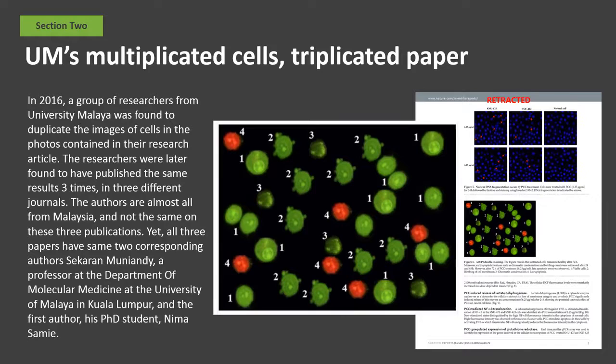In 2016, a group of researchers from University Malaya was found to duplicate the images of cells in the photos contained in their research article. The researchers were later found to have published the same results three times in three different journals. The authors are almost all from Malaysia and not the same on these three publications. Yet all three papers have the same two corresponding authors: Sekharan Munayimdi, a professor at the Department of Molecular Medicine at the University of Malaya in Kuala Lumpur, and the first author, his PhD student, Nima Sami.